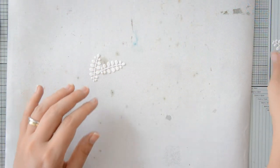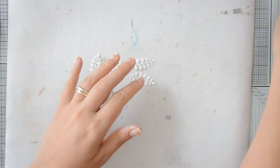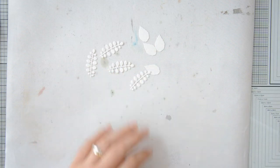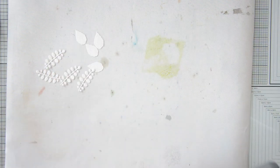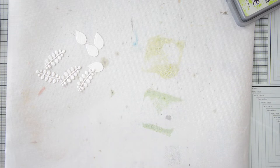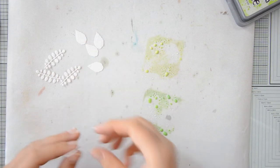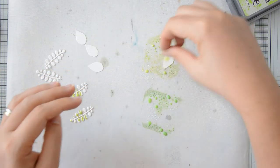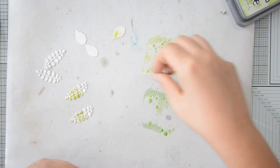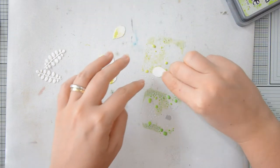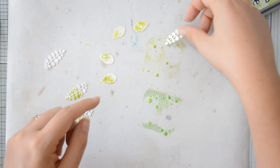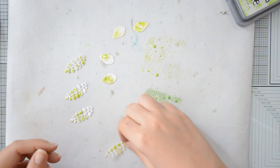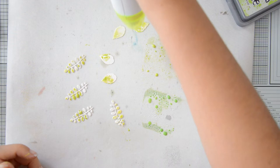I also die cut a bunch of leaves and flowers using the smaller dies in the So Sweet Valentine set. And I will be using again the ink smooshing technique as I did on my background to add some color to those die cuts too. For the leaves, I am using Twisted Citron and Mowed Lawn. And again, I am pressing the ink on my mat, activating it with water and then really quickly dipping the die cuts in the ink. And as you can see, I'm trying not to drag the die cuts on the ink because I'm not going for a full coverage type of look, but I want to create texture and interest.